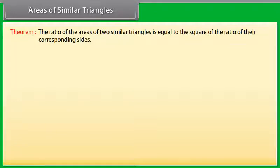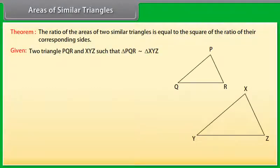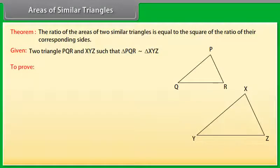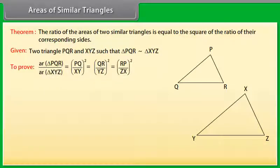Let us prove this theorem. Two triangles PQR and XYZ are given such that triangle PQR is similar to triangle XYZ. To prove: area of triangle PQR upon area of triangle XYZ is equal to PQ upon XY whole square, equals QR upon YZ whole square, which is equal to RP upon ZX whole square.